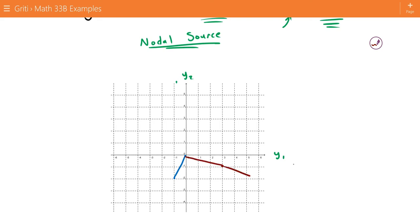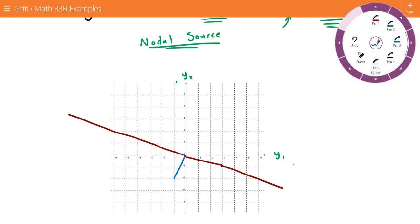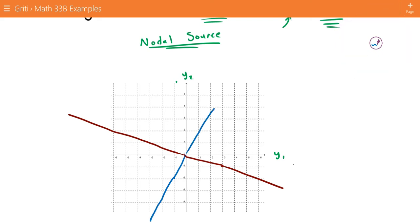And we can extend these half lines out. Since this is a nodal source, things are going to be going out from the half lines, or out from 0.